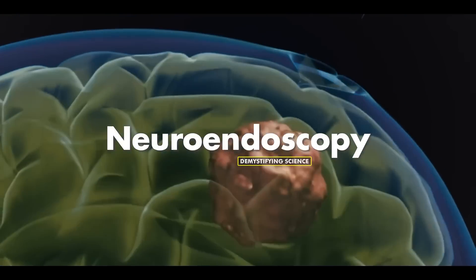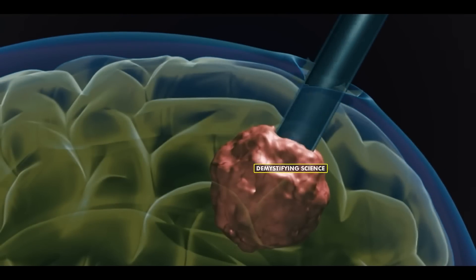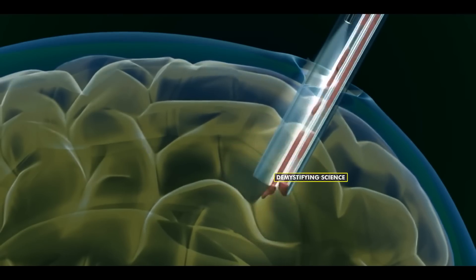Number 2: Neuroendoscopy. In this method, two to three small holes are made in the skull, and with the aid of a neuroendoscope, the tumor is located and removed.